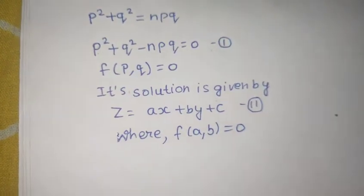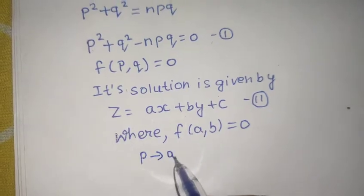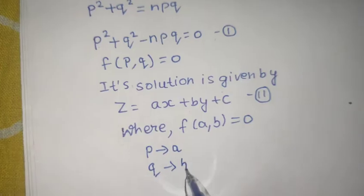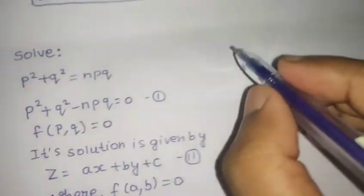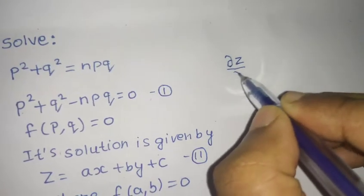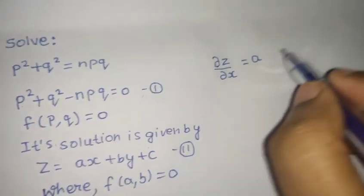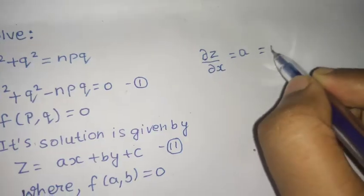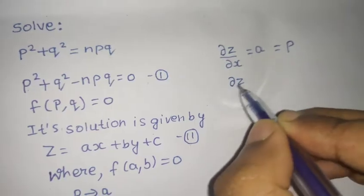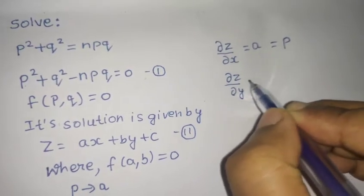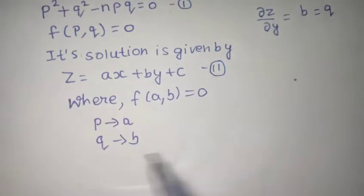Now, how to get F of A comma B equals to 0? You have to replace P by A and Q by B. Why it is so? Because if you look at this equation Z equals to AX plus BY plus C and from here if you find del Z by del X, you are going to get A because the latter two terms are constant and this del Z by del X is also known as P. Similarly, if you find del Z by del Y, you are going to get B and del Z by del Y is also known as Q. That's why we replace P by A and Q by B.